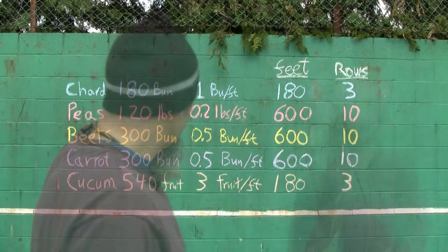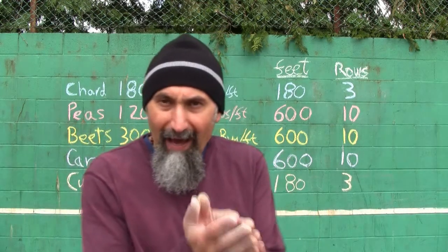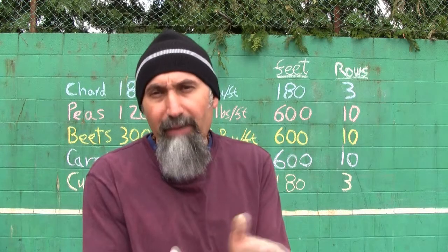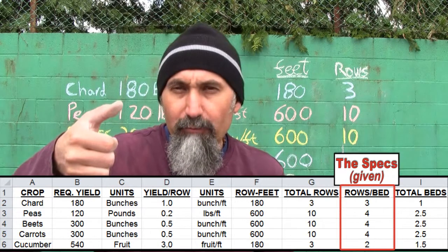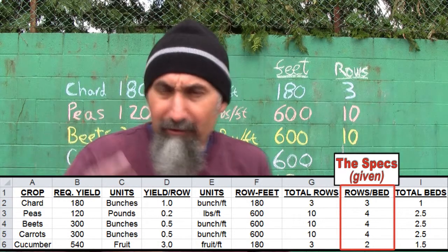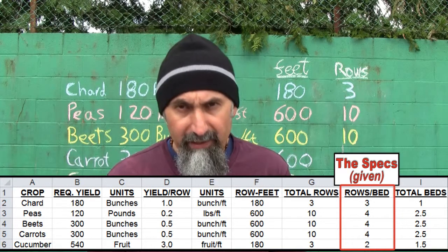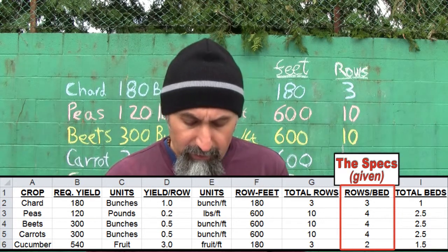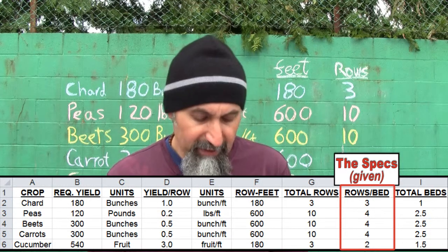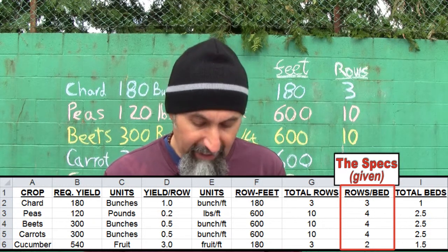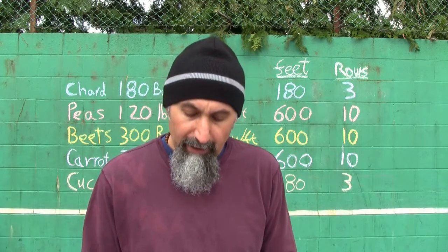To set up our section, we need to know how many rows we can get per bed, since our total bed width is only five feet. The specs are: three rows of chard per bed, four rows of peas per bed, four rows of beets per bed, four rows of carrots per bed, and two rows of cucumbers per bed.